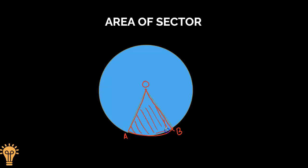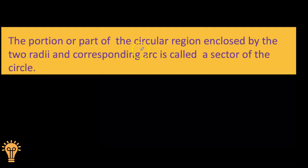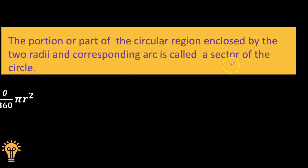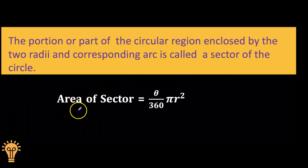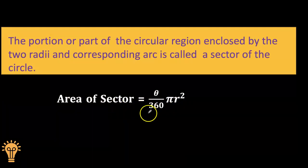We can call it a sector. The portion or part of the circular region enclosed by two radii and corresponding arc is called a sector of the circle. So we can calculate the area of sector by using this formula: theta by 360 into pi r squared.